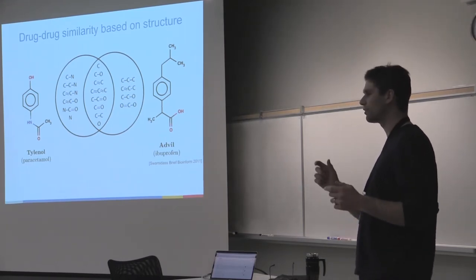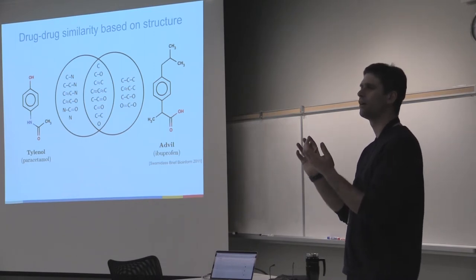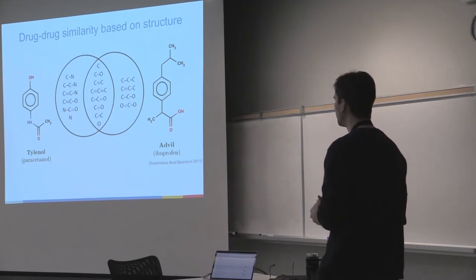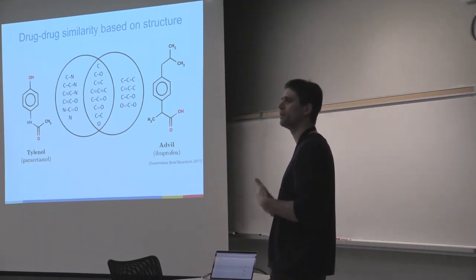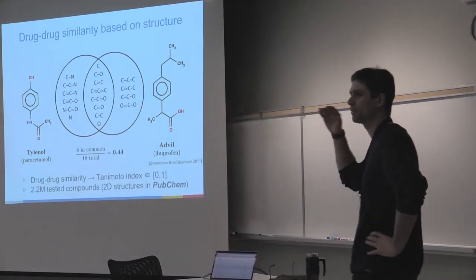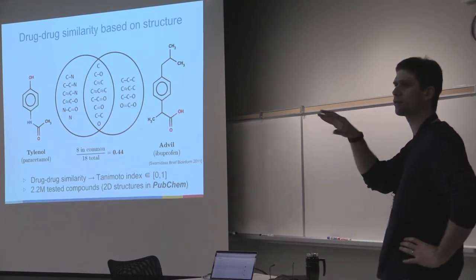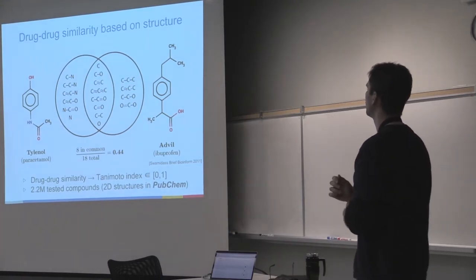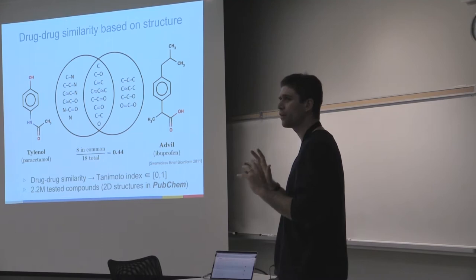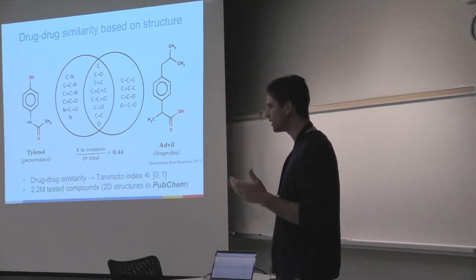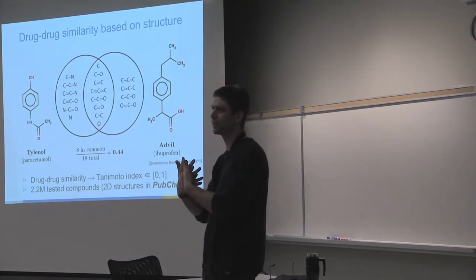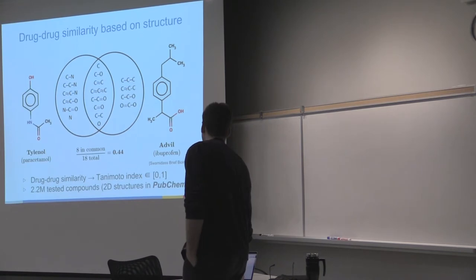Sometimes it doesn't work — sometimes just the fact that a molecule is the mirror of another one leads to a different mechanism of action. But many times this is true. People have been comparing drug structures for ages. The way they do it is to take a complex structure, divide it into pharmacophores — small subsets of the chemical structure — and look at how many are in common. It's a crude approach but it works decently well. It's called the Tanimoto Index, basically a Jaccard index on the pharmacophore fingerprints.